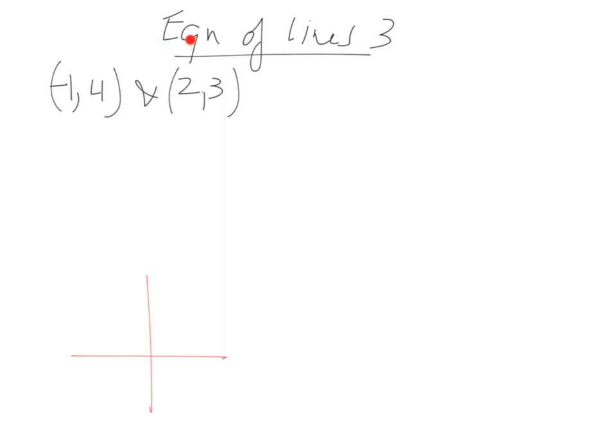So this is our third video on the equation of lines, a sequel to video 2. In this case, we've been given two points: negative 1 and 4, and 2 and 3. The idea is that we're finding the equation of a line between these two points, and we want that equation written in the form of y equals mx plus c.